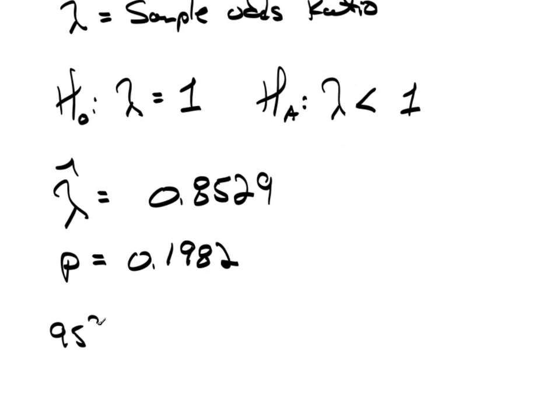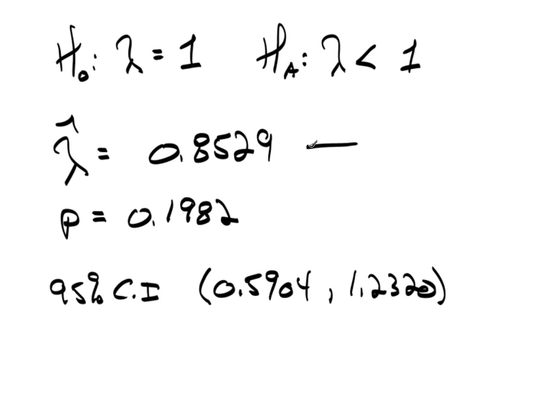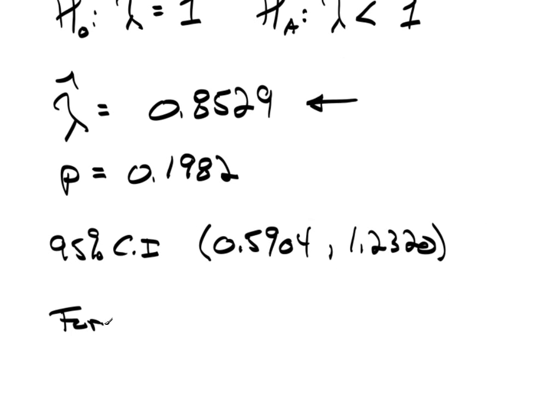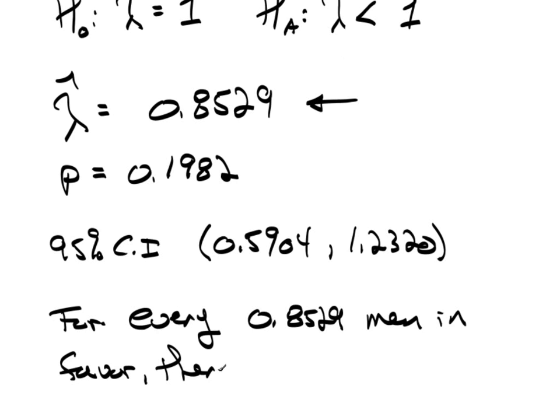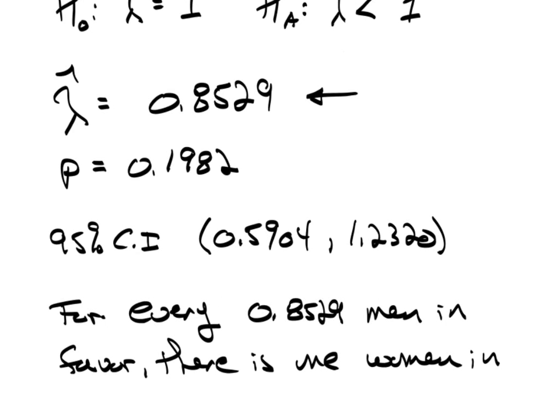And my 95% confidence interval was 0.5904 to 1.2320. Now, this is what this odds ratio is saying. So, stay with me for a second, because it's the interpretation of the odds ratio that makes it so strong. Now, this is saying, for every 0.8529 men in favor, there is one woman in favor.